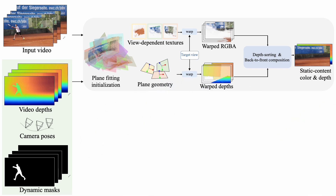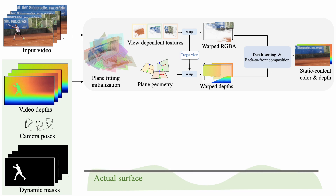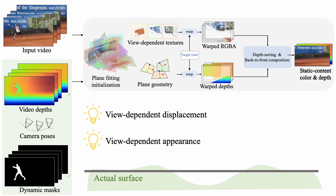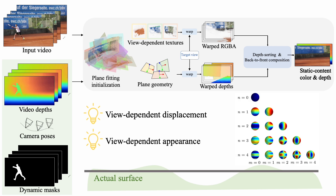But then there's a problem — our world is not just a collection of perfect planes. Let's assume that this is an actual surface and our planar approximation. When viewing a specific 3D point, the ray intersects at one location on our plane, but another ray pointing at the same 3D point ends up intersecting at a different location on our plane. To account for the inaccuracy of our approximation, we use view-dependent displacement and appearance, parametrized by the coefficients of spherical harmonics.